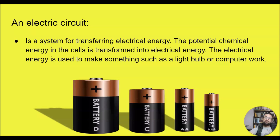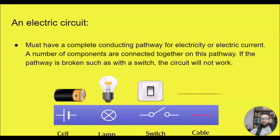An electric circuit is a system for transferring electrical energy. The potential chemical energy in the cells is transformed into electrical energy, which is then used to make something such as a light bulb work. An electric circuit must have a complete conducting pathway for electricity. A number of components are connected together in this pathway. If the pathway is broken — such as by a switch — the circuit will not work.